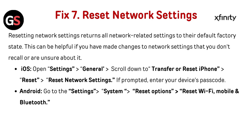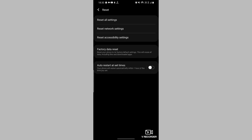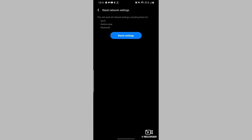Fix 7: Reset network settings. Resetting network settings returns all network-related settings to their default factory state. This can be helpful if you have made changes to network settings that you don't recall or are unsure about. For iOS, open Settings, go to General, scroll down to Transfer or Reset iPhone, tap Reset, then Reset Network Settings, and enter your passcode if prompted. On Android, go to Settings, then System, then Reset Options, then Reset Wi-Fi, Mobile, and Bluetooth.